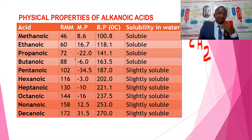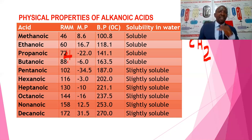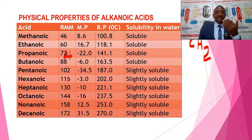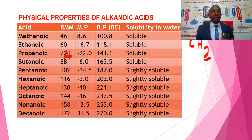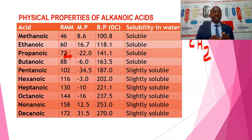It is important to understand that the RMM for propanoic should be 74, not 72. So 60 + 14 = 74; 74 + 14 = 88 for butanoic; 88 + 14 = 102; 102 + 14 = 116; 116 + 14 = 130. From one alkanoic acid to the next, they differ in molecular formula by CH₂ but by molecular mass they differ by 14. There is an increase in relative molecular mass with increase in carbon atoms, which of course has mass.